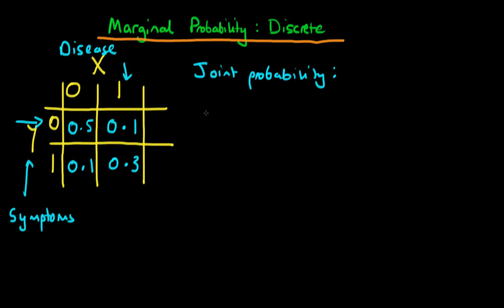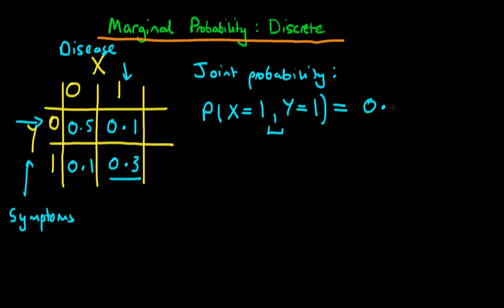The joint probability here might be: what is the probability that an individual has the disease, so P(X=1), and also has symptoms for that disease? This is what we call a joint probability — the comma notation denotes both events occurring simultaneously. To find it, we just find the relevant row and column, and it's simply the 0.3 value.